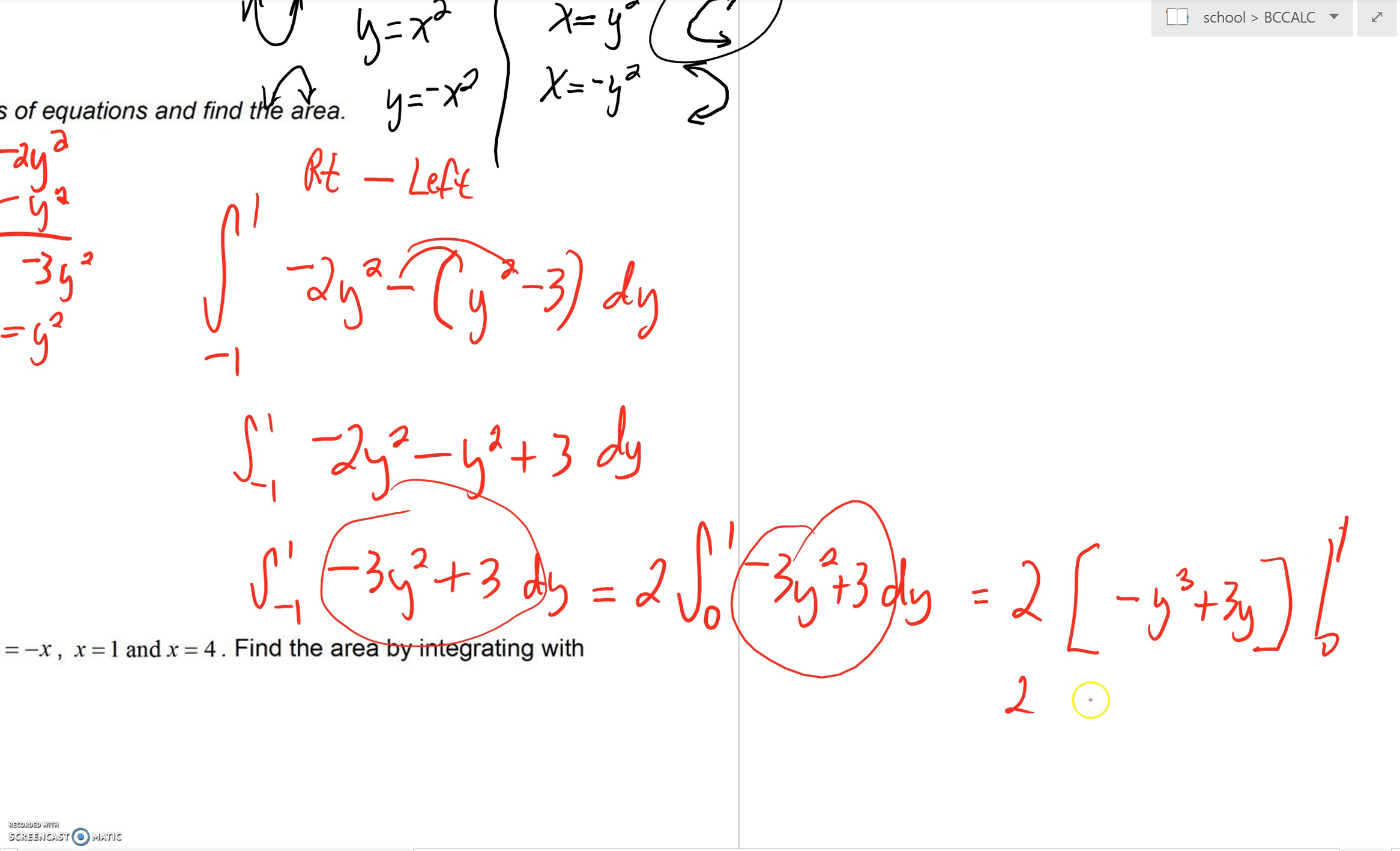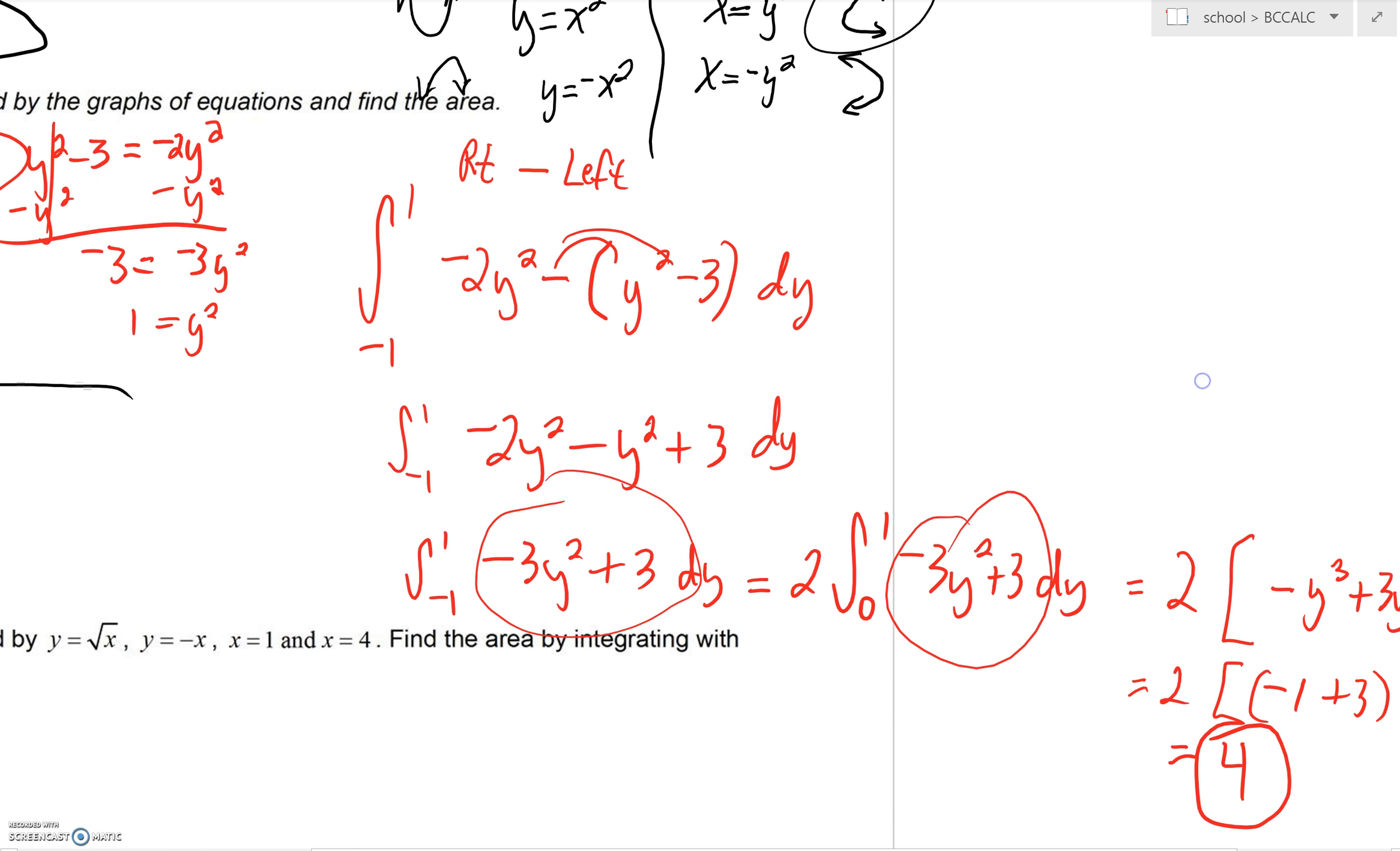By the time you would have typed this into a calculator, you would have effectively gotten the answer by hand more quickly. So 3 plus negative 1 is 2, 2 times 2, you'd get 4. And there you have it, this area between your curves would be a 4.